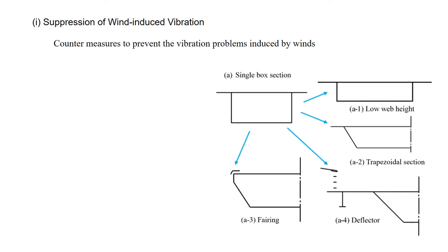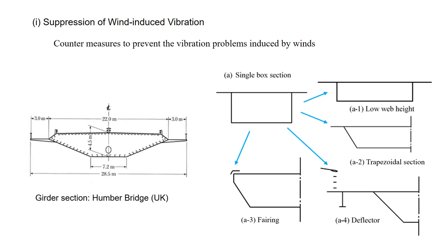The commonly used single-box section A can be improved by decreasing the web height A1, utilizing the trapezoidal section A2, attaching fairings A3, or attaching deflectors A4. A good example can be found by the girder section of the Humber Bridge.